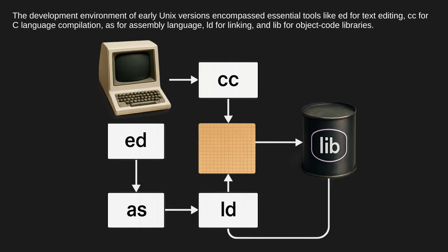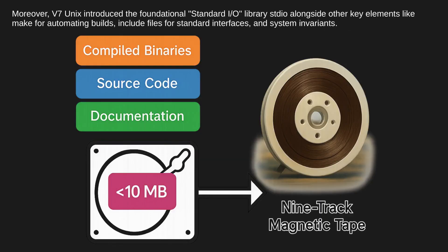The development environment of early Unix versions encompassed essential tools like ed for text editing, cc for C language compilation, as for assembly language, ld for linking, and lib for object code libraries. V7 Unix also introduced the foundational standard I/O library (stdio) alongside other key elements like make for automating builds and include files for standard interfaces and system invariants.